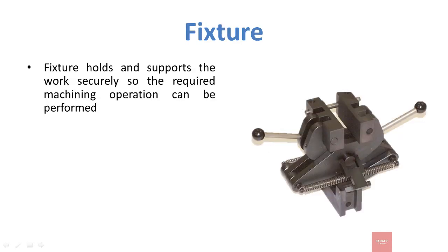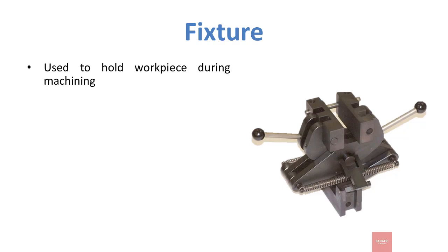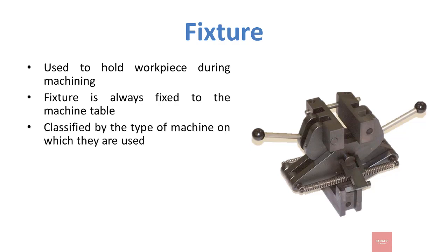Now, what is a fixture? Fixture holds and supports the work securely so the required machining operation can be performed. Fixtures are used to hold the workpiece during machining. Fixture is always fixed to the machine table, while jigs are movable and portable from one machine to another. Fixtures are classified by the type of machine on which they are used, and each fixture is specially designed for specific machines.